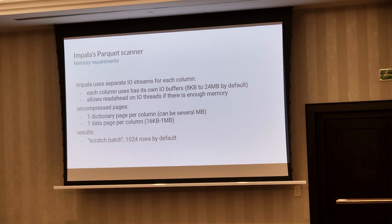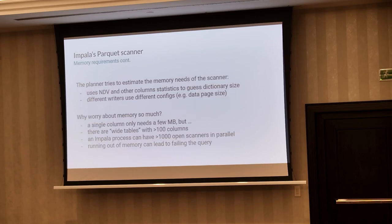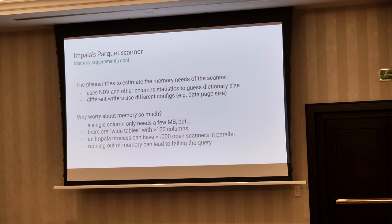After we read the pages, we have to decompress them, and for that we keep in memory one data page for every column. If it's dictionary encoding, we also need the dictionary page, which can be pretty large. We have batches of a limited number of rows that can also take some memory. We try to estimate this during planning, but it's not easy. We use the number of distinct values to estimate dictionary sizes, but reality may be very different. When starting new scanner threads, we try to guess based on previous threads' actual memory needs whether we are free to launch another thread.